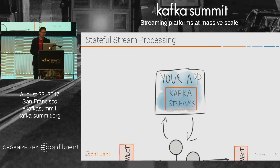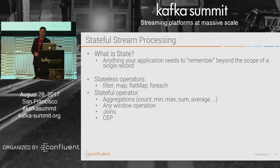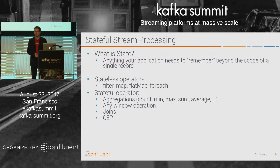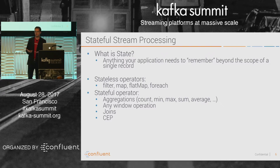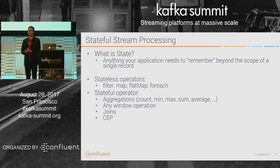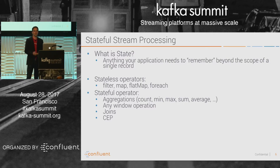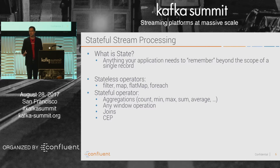Now I want to go into stateful stream processing. Your application might have state — and the first question is: what is state actually? My high-level definition is basically anything the application needs to remember beyond the scope of one single record. There are stateless operators in Kafka Streams as well, like filter, map, and flat map. For those it's pretty easy — you have a single record, you evaluate its fields, and you decide whether to drop it or send it downstream, without needing any context information.